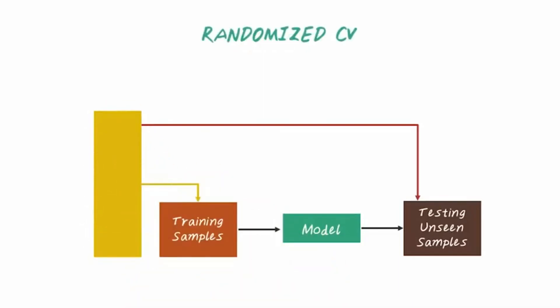Finally, randomized cross-validation will randomly split the data set into training and testing. For each such split, the model is fit to the training data set, and the prediction accuracy is assessed using the validation set. The results are then averaged over all the splits.